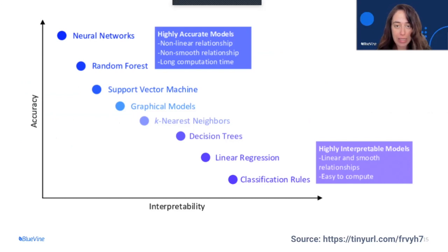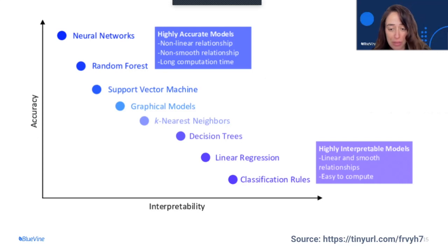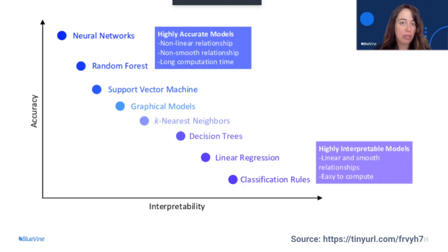This is a nice chart that illustrates the trade-off between accuracy and interpretability. You have models which are highly interpretable, such as linear regression and classification rules, but are not very good at making accurate predictions. On the other side, neural networks make very accurate predictions but are very hard to interpret.